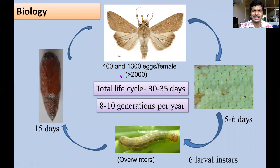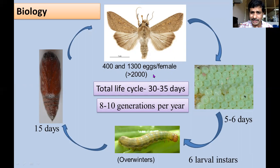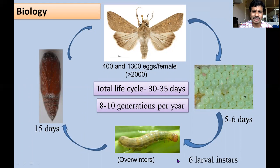Coming to the biology of this insect: an adult can lay 400 to 1,300 eggs, with instances of up to 3,000 eggs being reported. Eggs take about five to six days to hatch (incubation period). The larva undergoes six instars, and the insect can complete eight to ten generations per year, as the egg-to-adult cycle takes about 30 to 35 days.